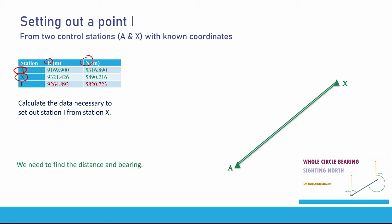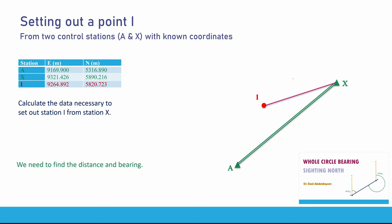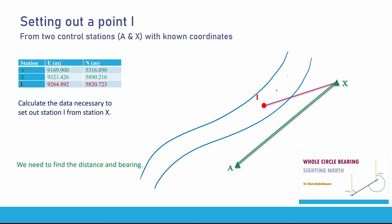Our aim for today's session is to set out a point I, whose coordinates are given in the table. You know the coordinates but you don't know its exact location on the ground — and this is our task today: to calculate the data necessary to set out this point in its exact location. This point might be a corner of a building, an intersection point or tangent point of a circular curve, or a center line of a road.